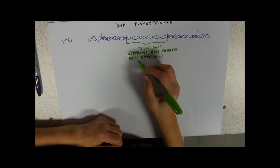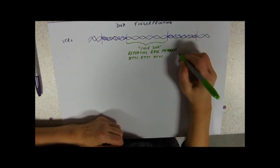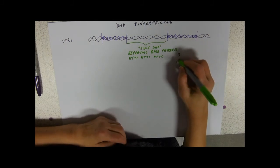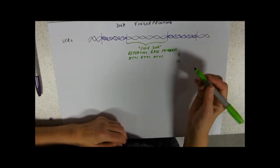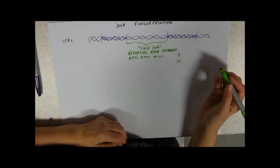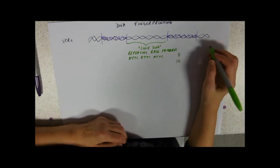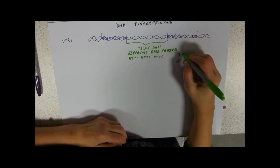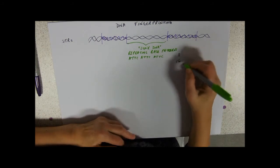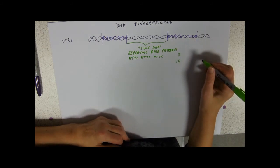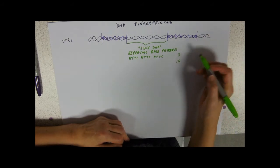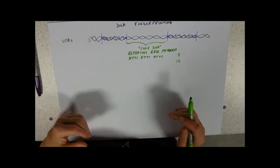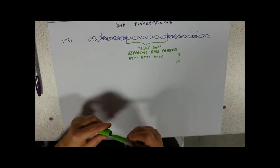On your other chromosome you'll have the same repeat but you might have a different number of them. So if I've got three repeats on one chromosome I might have 16 on the other chromosome. And that's what I pass on to my children. So one of mine might have inherited the three pattern from me or the 16 pattern from me, and then they'll have got a different pattern, say five and ten, from their dad.